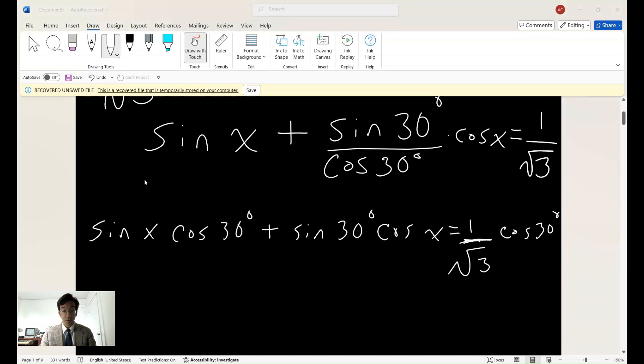All right. So from there, we have a fraction sine of 30 over the cosine of 30 in degrees. We can multiply both sides of the equation by the denominator cosine of 30 degrees. And if we do that, we have sine of x times the cosine of 30 degrees plus the sine of 30 degrees times the cosine of x equals 1 over the square root of 3 times the cosine of 30 degrees. And now I hope that you can recognize the identity because the left hand side is the sine of a sum, what we call the sine of a sum identity, which is the sine of a times the cosine of b plus the cosine of a times the sine of b is equal to sine of a plus b. So that's what we're going to do next.